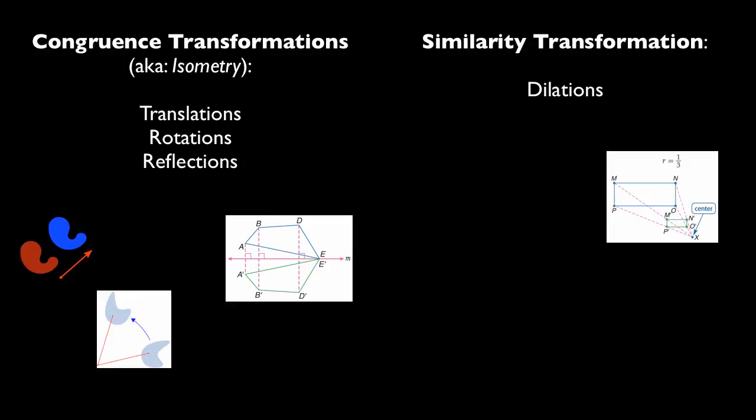whereas dilations are similarity transformations, right? The preimage and image don't necessarily have to be congruent, but they are indeed similar.